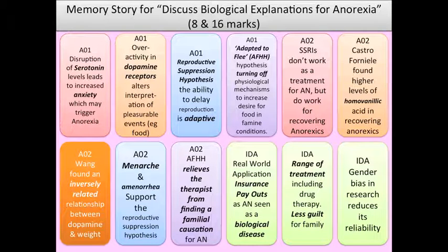Cheryl then sees a very obese man who wants lots of ice cream but has no arms, so she feeds him and he sits very still, totally enjoying himself. This represents Wang's finding that obese people have lower levels of dopamine receptors and that dopamine is inversely related to body weight — the opposite of anorexics, who have overactivity of dopamine receptors in the basal ganglia.